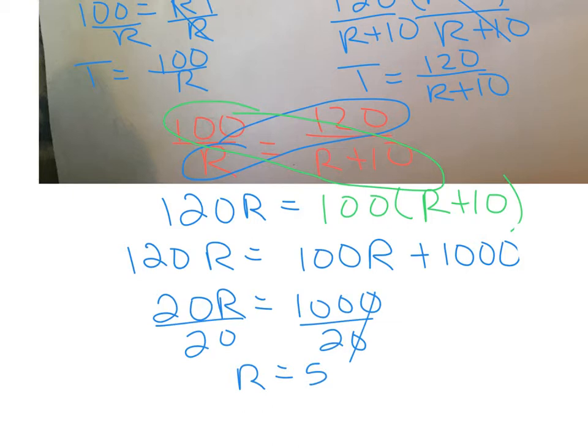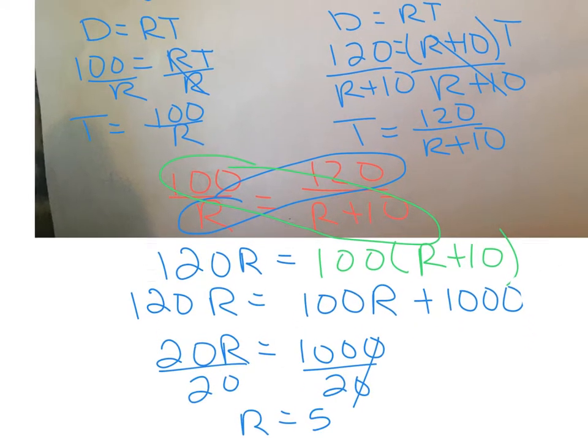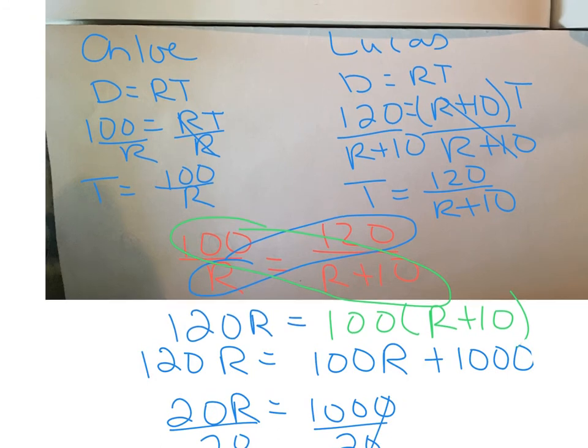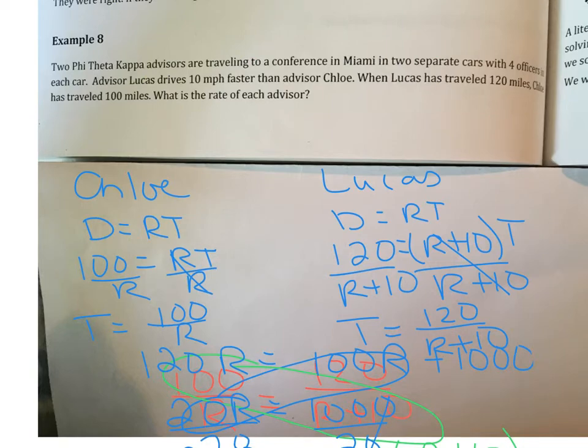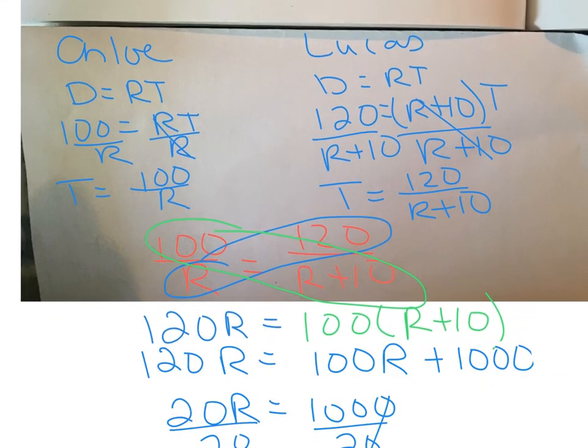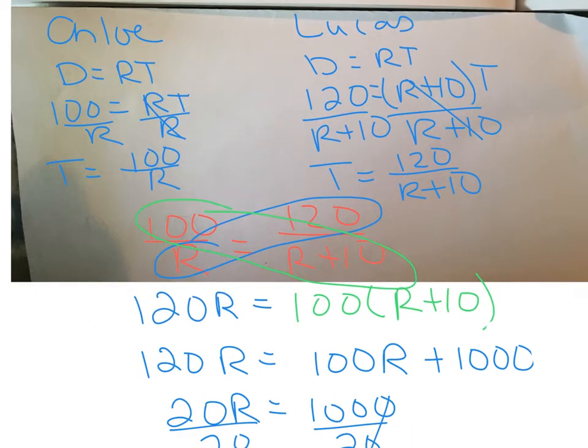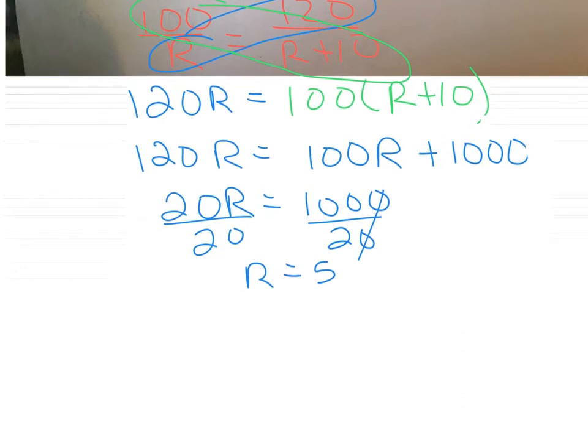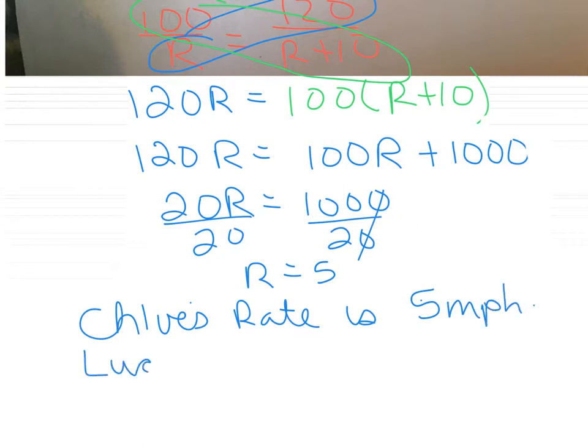Alright, R stands for Chloe's rate. So we know Chloe's rate is 50 miles per hour. What did the question ask us? Okay, the question asks, what is the rate of each advisor? So we just found Chloe's rate. Chloe's rate is 50 miles per hour, and Lucas's rate is 60 miles per hour, since Lucas was going 10 miles per hour faster than Chloe.